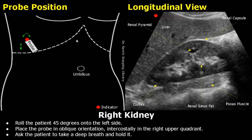Roll the patient 45 degrees onto the left side and place the probe in an oblique orientation through the lower rib spaces. This is an intercostal approach. Ask the patient to take a deep breath and hold it. You will get this image.